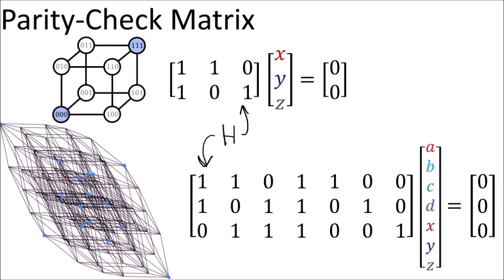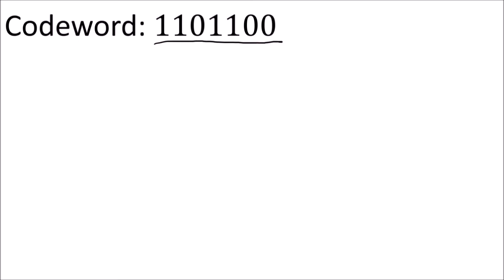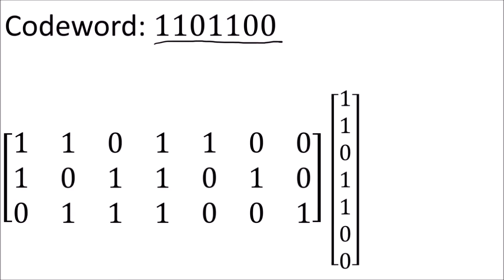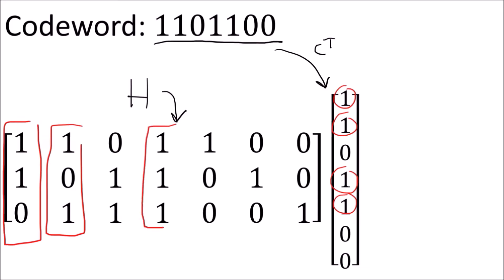Let's go through an example of using the parity check matrix for a codeword in the Hamming 7-4 code. Here's the codeword 1101100. To find out if it's a valid codeword, we take its transpose to get a column vector and apply the parity check matrix to it. In the codeword column vector, the entries with 1s are the 1st, 2nd, 4th, and 5th entries. This means that to get the result of this multiplication, we just add the 1st, 2nd, 4th, and 5th columns of the H matrix.